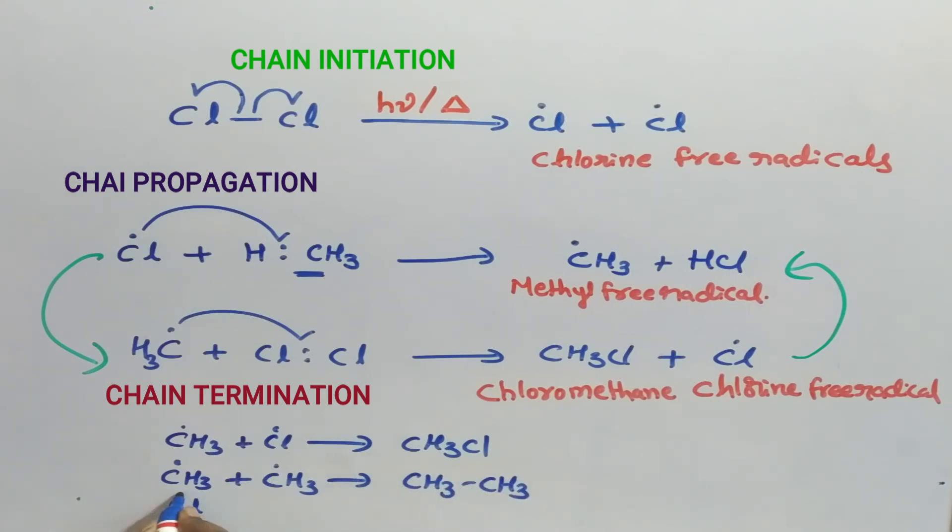Finally, chlorine free radicals react to form chlorine molecule. This results in the termination of the chain reaction, so no further propagation occurs because free radicals are not available here. This is about halogenation of alkanes.